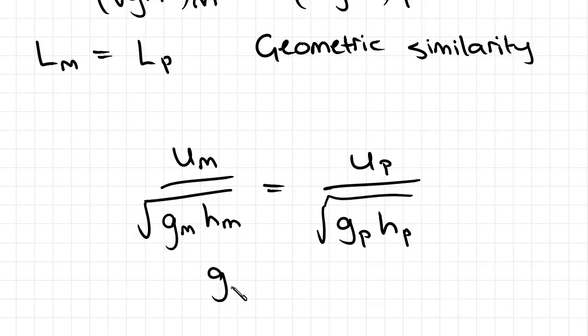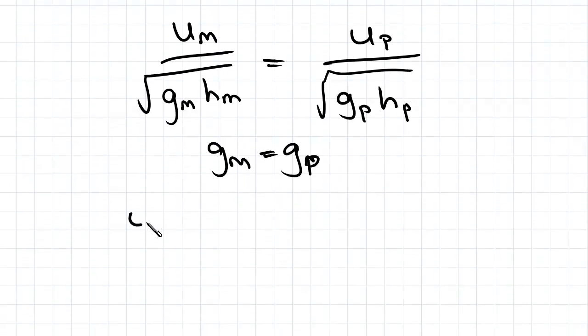We know that GM equals GP because it's unreasonable to think that you're going to impose a different gravitational force in an experiment. So we're going to make that equal, and we can reduce the equation to UM over square root of HM equals UP over square root of HP.